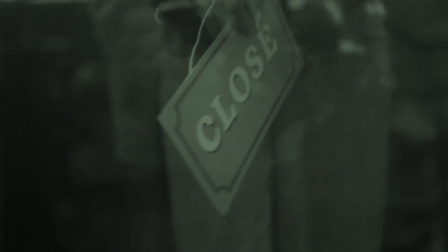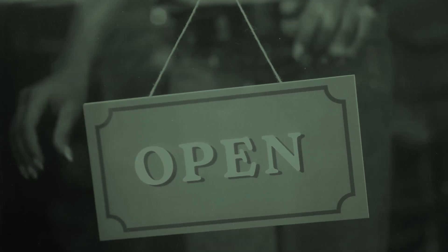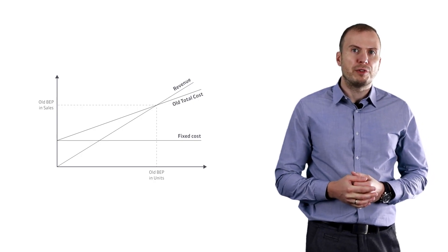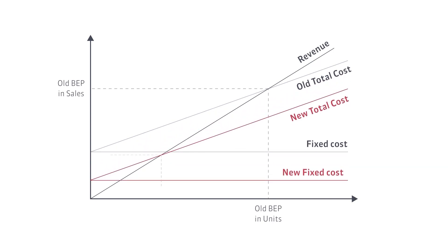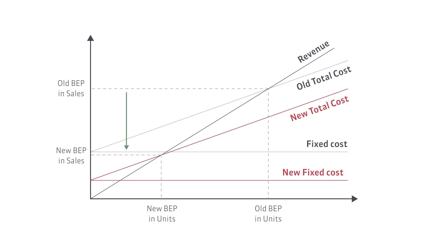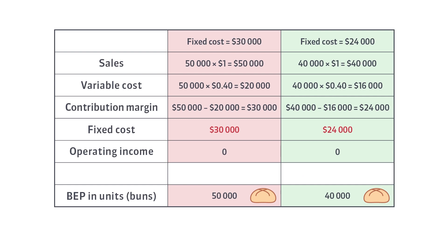The owner of the bakery decided to change its location to reduce the fixed cost. When the fixed cost is reduced, the breakeven point can be achieved faster — the new breakeven point in sales and in units is smaller than before the change. Suppose the bakery owner managed to reduce the fixed cost to $24,000. The lower fixed cost will allow the bakery to breakeven with 10,000 fewer buns sold.